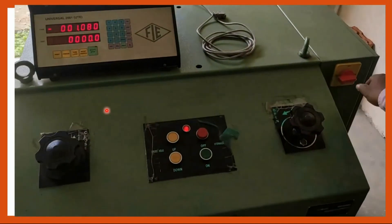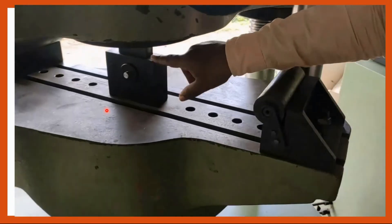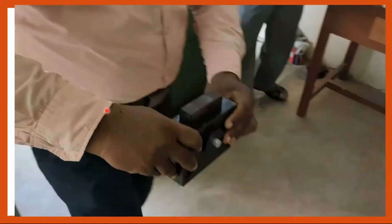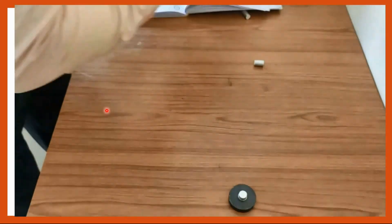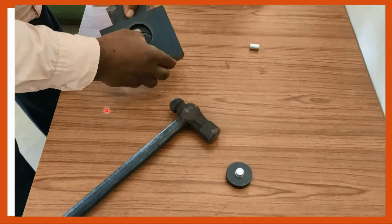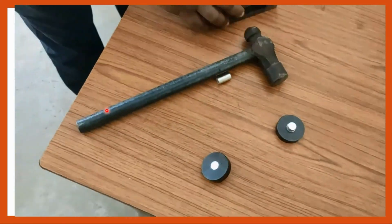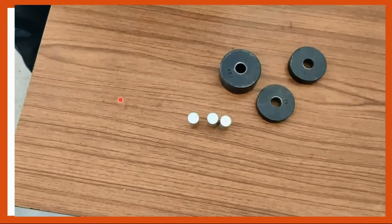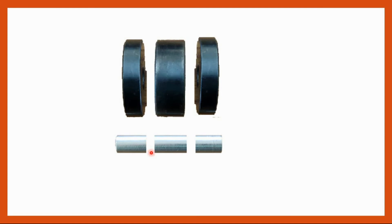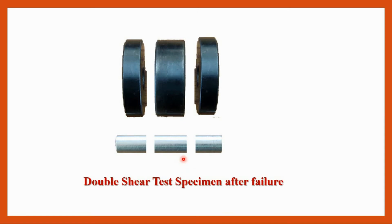Release the left valve and take out the specimen from the UTM machine. When the specimen is removed from the box, we get the failure with 2 shear resistances — meaning we have 3 pieces of the specimen. This shows that the material was subjected to double shear. This is the double shear test specimen after failure.